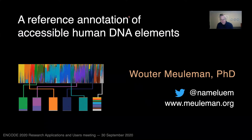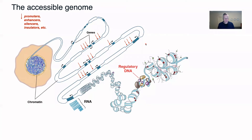Today I'm happy to present our work on constructing a reference inventory of accessible human DNA elements. If we look at the human genome, it's organized in the cell nucleus by way of this long chromatin fiber containing many tens of thousands of genes, coding and non-coding, that are each surrounded by regulatory elements such as promoters and enhancers.